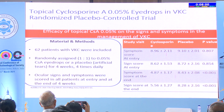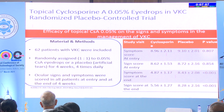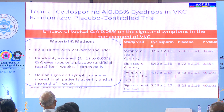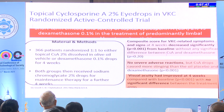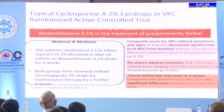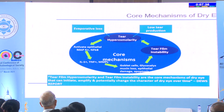Topical cyclosporine in VKC is appropriate only for mild or early moderate disease, not severe cases. There is good evidence for cyclosporine 2%, which I have been using since 1998–99 — we used to make it ourselves, and now these preparations are available.